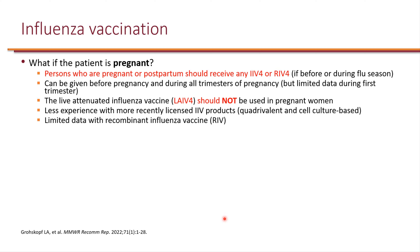What are vaccine considerations during pregnancy? Persons who are pregnant or postpartum should receive any inactivated influenza vaccine or recombinant influenza vaccine before or during the flu season. It can be given before pregnancy and during all trimesters, though there is limited data during the first trimester. The live attenuated vaccine is contraindicated during pregnancy. There is also less experience with more recently licensed inactivated influenza vaccines such as the quadrivalents and cell-cultured-based vaccines, and limited data with recombinant influenza vaccine.